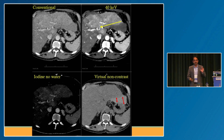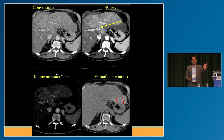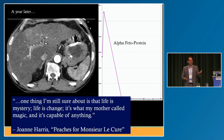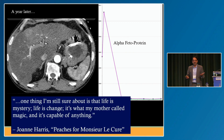This patient showed up for every follow-up exam high on cocaine, so they never treated him. A year later, he comes back to the ED and his tumor is gone. This is a spontaneous regression of an HCC, and it just reminds me that life is capable of magic sometimes.